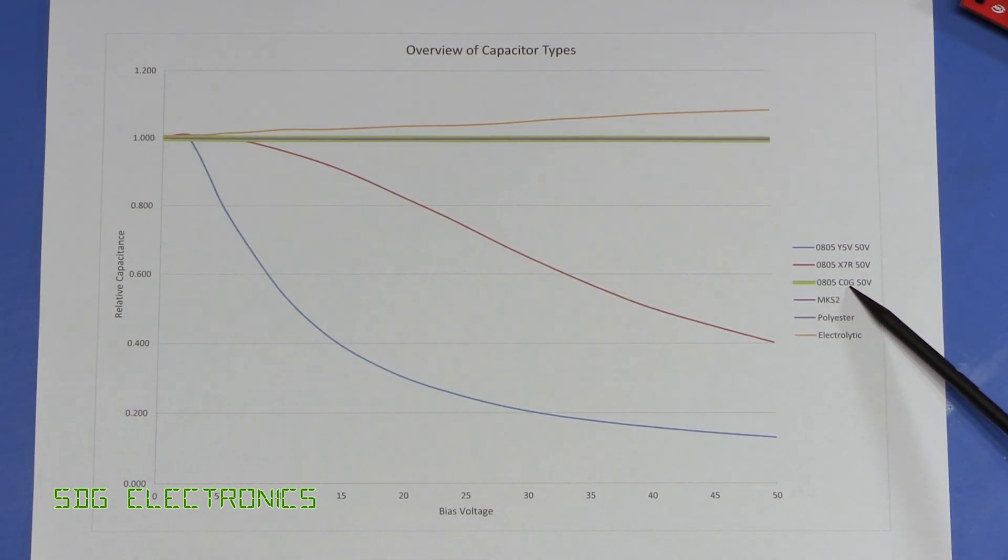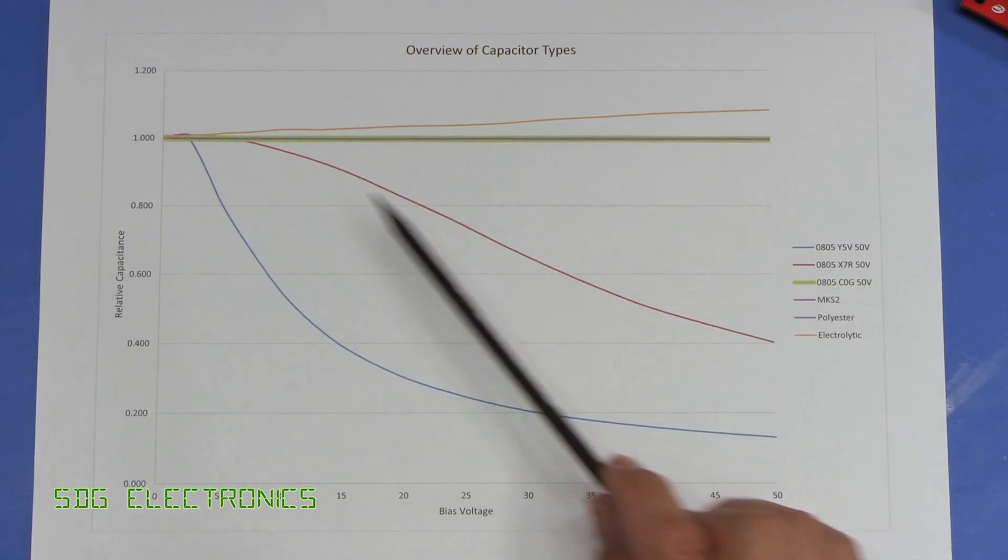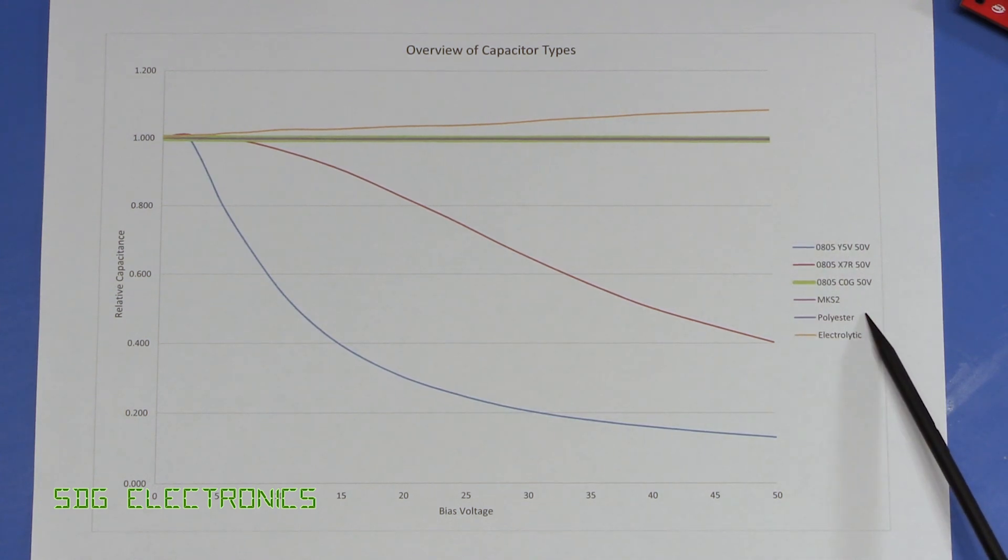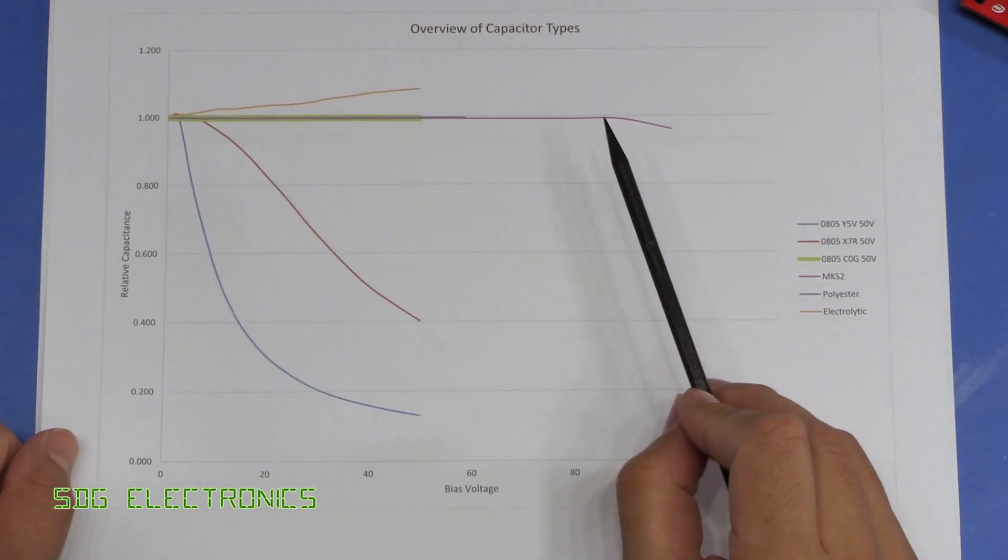Then we've got a WIMA MKS2 metallized polyester capacitor, that one was very stable. And then we've got a Panasonic polyester capacitor, and that Panasonic one was stable right up until its highest voltages here.